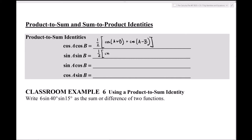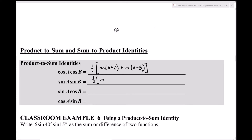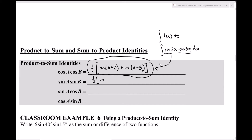Where do you use these in calculus? You simplify formulas that look like products. For example, if you have the integral of cosine(2x) times cosine(3x) dx and want to integrate that with respect to x, you would use the first product-to-sum formula to replace the product and it makes the integral procedure a lot easier. We don't use that at all in pre-calculus.